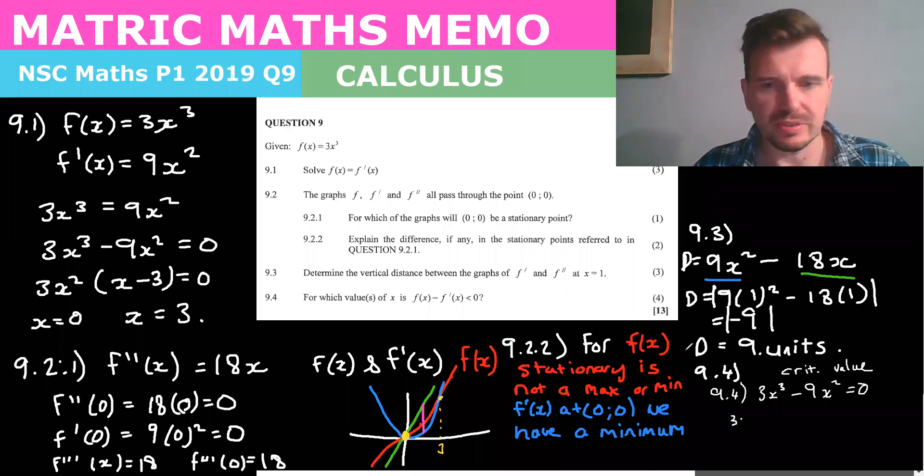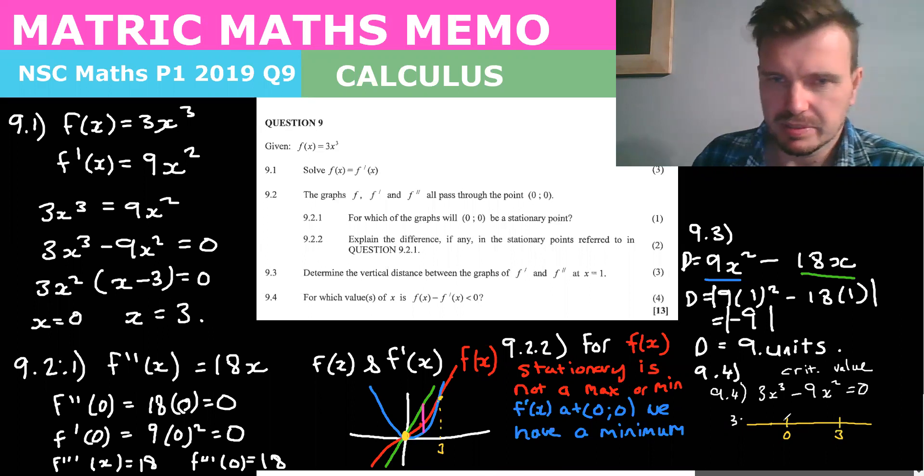Okay so the values the critical values are three and zero. So now what we need to do is we need to just quickly put those into a number line so we have zero and three and we're going to check where it's positive and where it's negative.